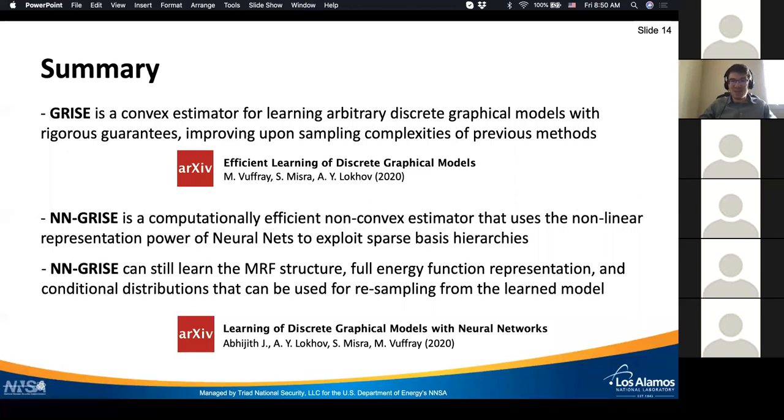Although it becomes a non-convex estimator, it uses the nonlinear representation power of neural nets to explore parsimonious basis hierarchies. The good thing is that neural network GRISE still maintains the attractive features of the original GRISE estimator. In particular, it can learn the structure of the MRF. With some suitable modifications, it can parameterize and learn the full energy function of the model. Finally, it produces the conditional distributions that can later be used for sampling from the learned model, and I have presented several examples of this in the numerical session.